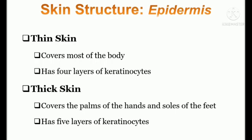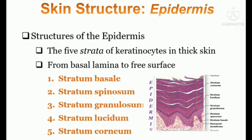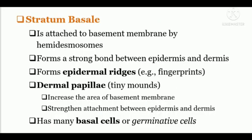There are two types of skin: thin skin and thick skin. Thin skin covers most of the body and has four layers of keratinocytes. Thick skin covers the palms of the hands and soles of the feet only, and it has five layers of keratinocytes. The five layers of keratinocytes are: stratum corneum, stratum lucidum, stratum granulosum, stratum spinosum, and stratum basale or the basement membrane.